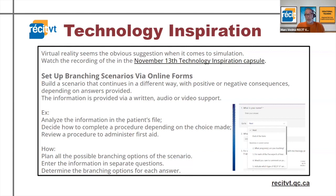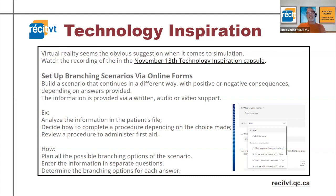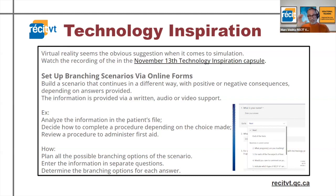Situations where this could be useful: when you want students to analyze information on a patient's file, make decisions about how to complete a procedure, or review first aid procedures. You need a clear, precise idea planned in advance — what the branching options are going to be, what the questions are. Personally, I like to do it on a big piece of paper and do a mind map first. Clarify the intention, enter the information in separate questions, then determine the branching option for each answer.